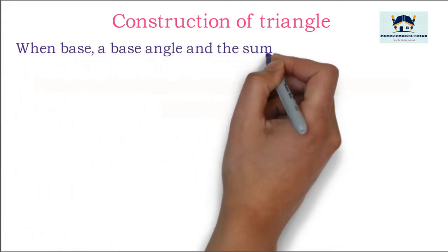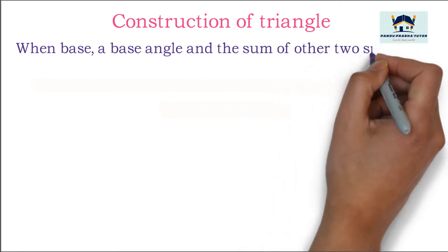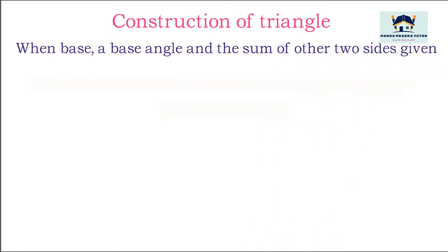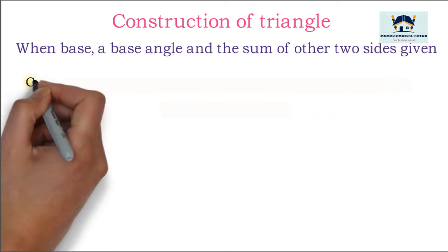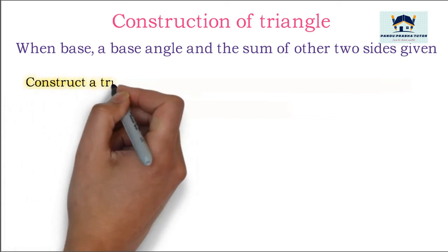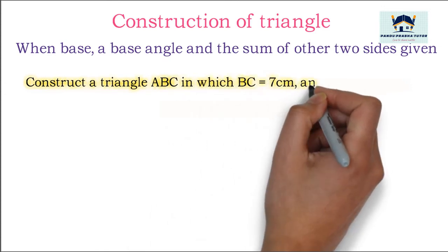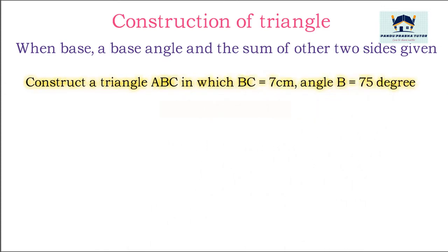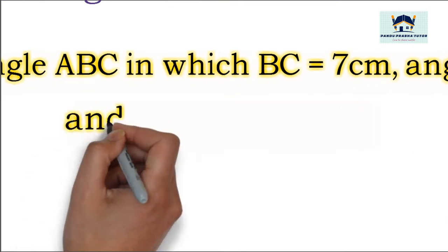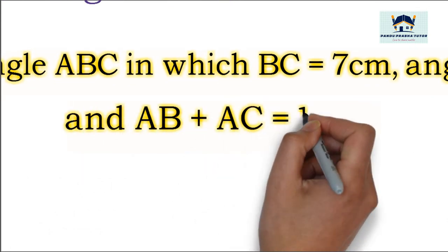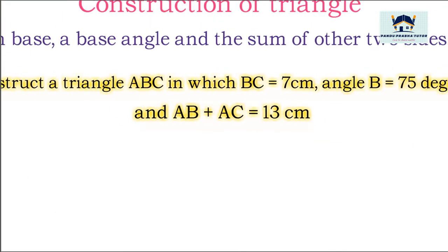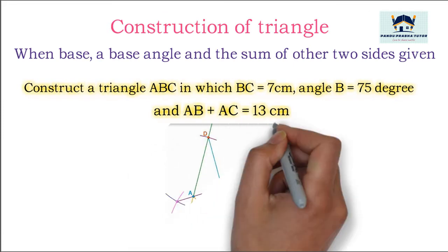When base, a base angle, and sum of other two sides are given. Construct a triangle ABC in which BC is equal to 7 cm, angle B is equal to 75 degrees, and sum of the two sides AB plus AC is equal to 13 cm.